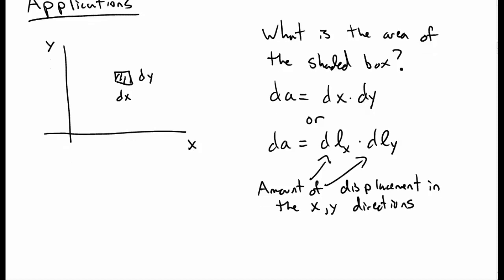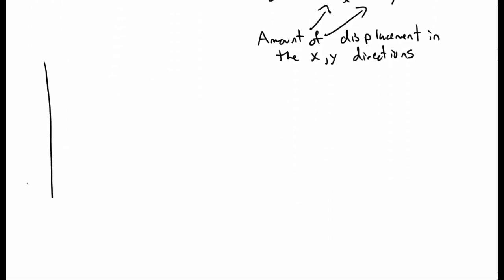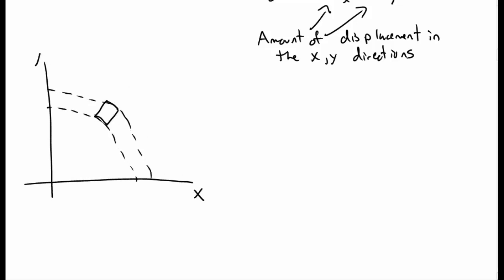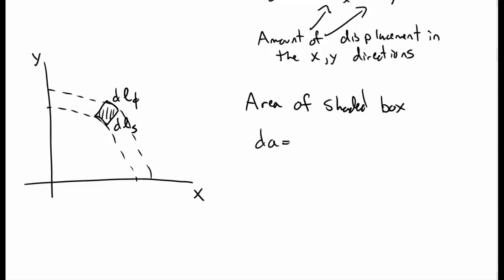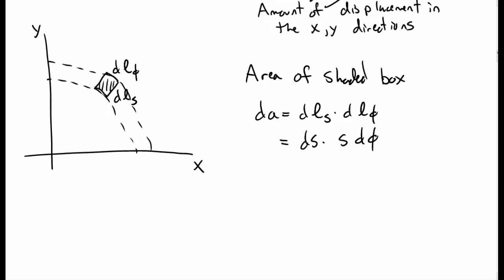But let's see what happens if we consider a curved coordinate system, namely polar coordinates. Now we have a box which is slightly curved, with displacement in both the s direction and in the phi direction. The area of the shaded box is still just the length times the height — it looks like a rectangle — so it's dl_s times dl_phi, the length in the s direction times the length in the phi direction. So we come up with this expression for the small amount of area.